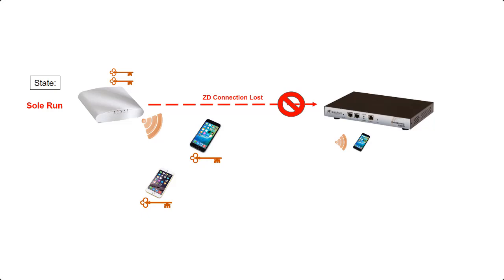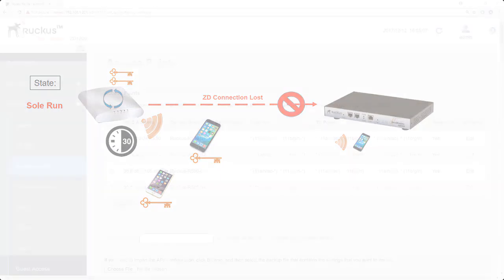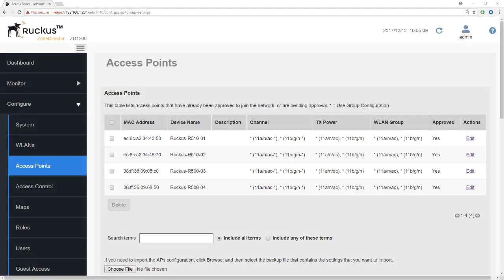The Zone Director isn't aware of new clients because no data is passed back to it, but the client is able to associate and function as normal. There is one remaining problem: by default, after 30 minutes the access point reboots if it loses connectivity to the Zone Director, which means client stations will reconnect after the reboot - an inconvenience and a setting you want to take care of.